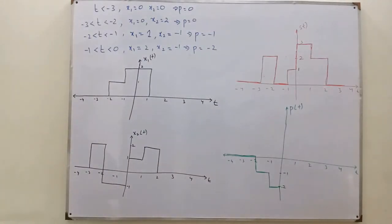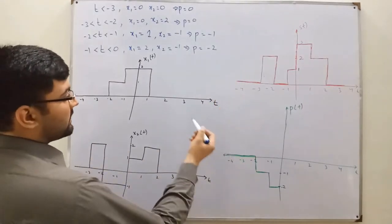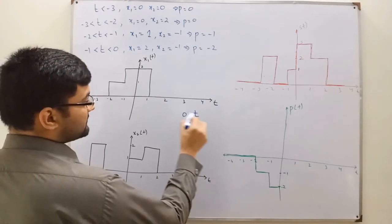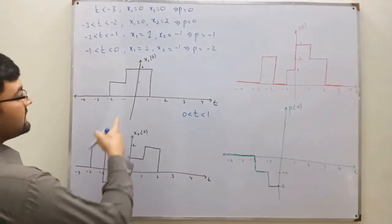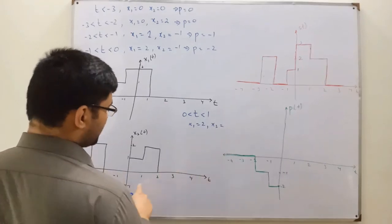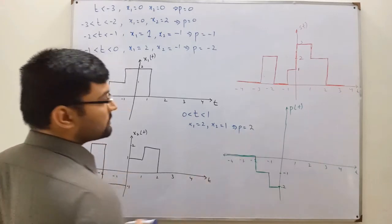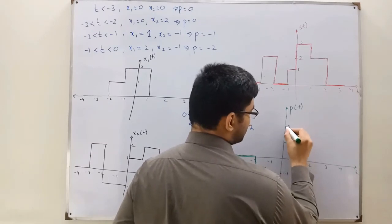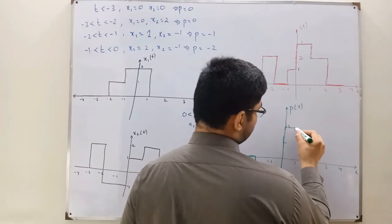From 0 to 1: when t is greater than 0 and less than 1, x1 is 2 and x2 is 1. So the product equals 2. There is a direct jump to 2 and it stays 2 until t equals 1.